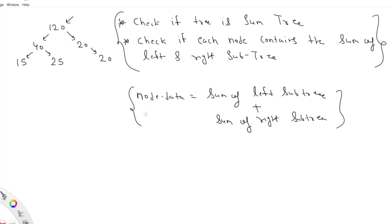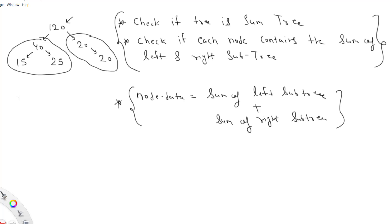This property defines a Sum Tree. One approach is to start from the top: for the root 120, calculate the sum of the left subtree and the sum of the right subtree and check if they match. Here 120 equals 80 plus 40, so it matches. Then we recurse to the left node where 40 matches 15 plus 25.